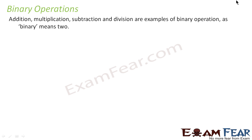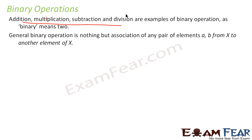Addition, multiplication, subtraction, and division are all examples of binary operations. Binary means two — you have two numbers and you perform an operation on those two numbers. A general binary operation is nothing but an association of a pair of elements.